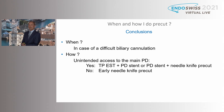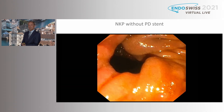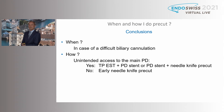To conclude: when proceeding to pre-cut in case of difficult biliary cannulation — if there is unintended access to the main pancreatic duct, perform trans-pancreatic septotomy plus PD stent, or PD stent plus needle knife pre-cut. If there is no unintended PD access, proceed to early needle knife pre-cut. Thank you very much.